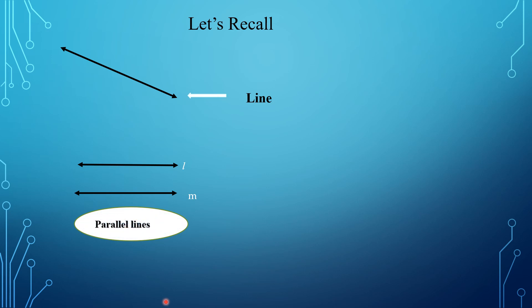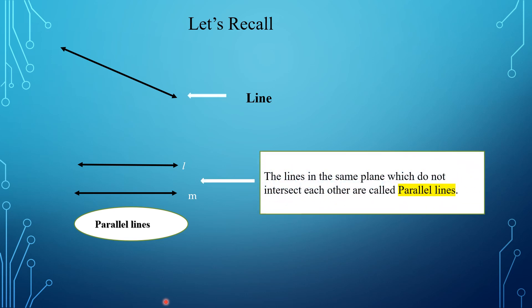Let us see the definition of parallel lines. What are parallel lines? The lines in the same plane which do not intersect each other are called parallel lines. Here, line L and line M do not intersect and both lines lie in the same plane. So line L and line M are parallel lines.